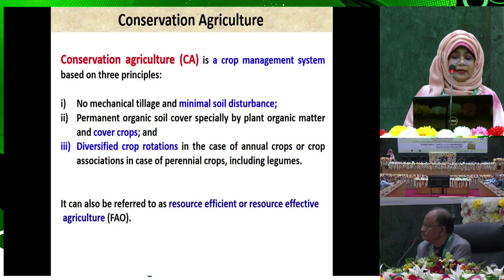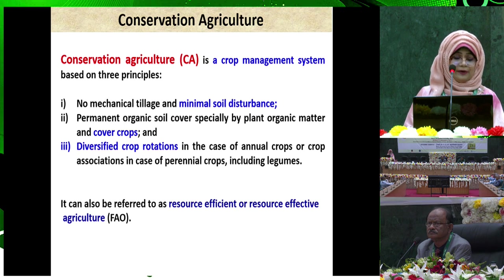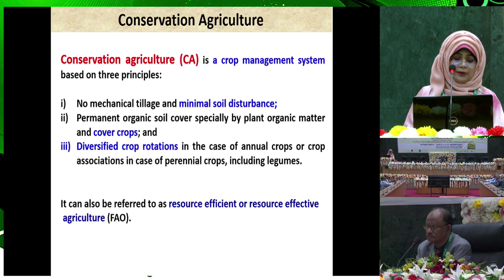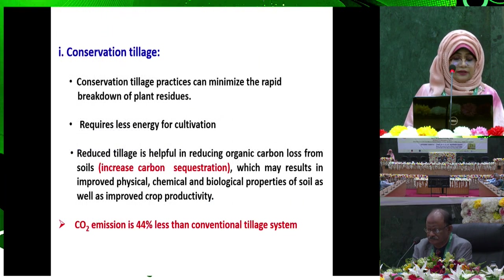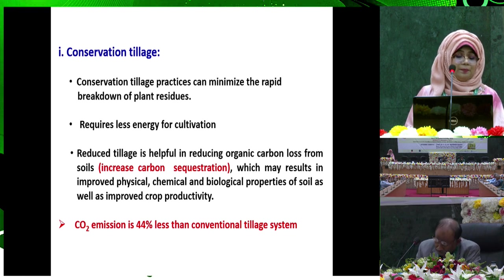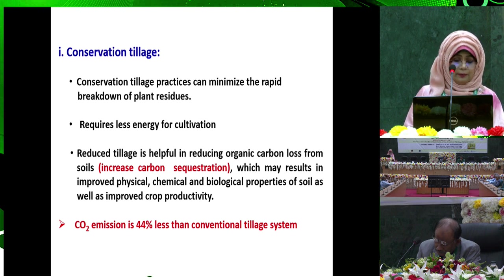Conservation agriculture is a crop management system based on three principles: minimal soil disturbance, cover crops, and diversified crop rotation. It is referred to as resource-efficient or resource-effective agriculture. Conservation tillage requires less energy for cultivation and can minimize the rapid breakdown of plant residues. It increases carbon sequestration, and carbon dioxide emission is 44% less than in conventional tillage systems.